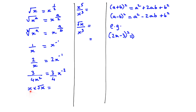Here we have x to the power of 1 multiplied by square root x. First write it as a power: x to the power of 1 multiplied by x to the power of half. Whenever you multiply, you add the powers, so it's going to be x to the power of 3 over 2. In this case we have x to the power of 5 divided by x to the power of 3 — if we divide we subtract the powers, so 5 minus 3 gives us x to the power of 2.